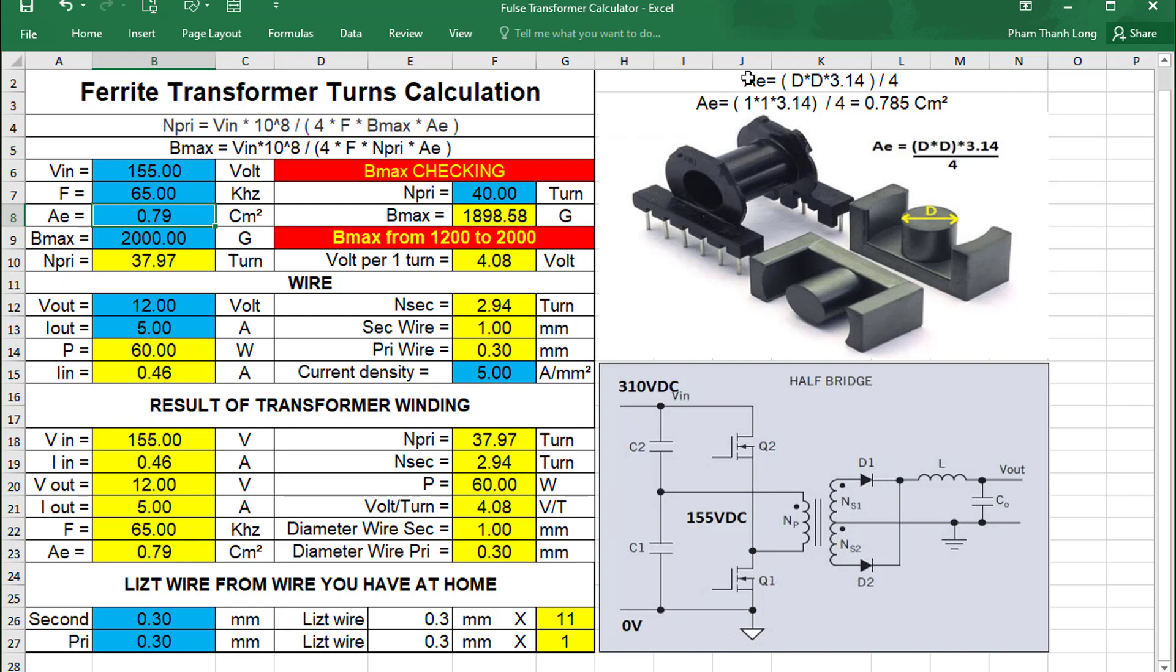We have the formula for calculating E for the cylindrical core as above. With a diameter of 1 centimeter, E will be equal to 0.785 centimeters squared. Bmax we can choose from 1200 to 2000, here I choose 2000. We see the result after calculating the odd number of turns. We will adjust Bmax as follows so that the number of rounds is even.